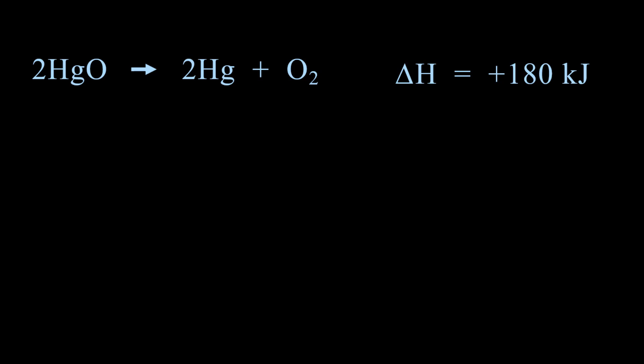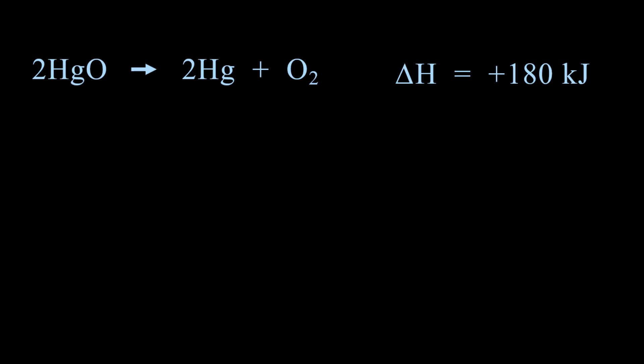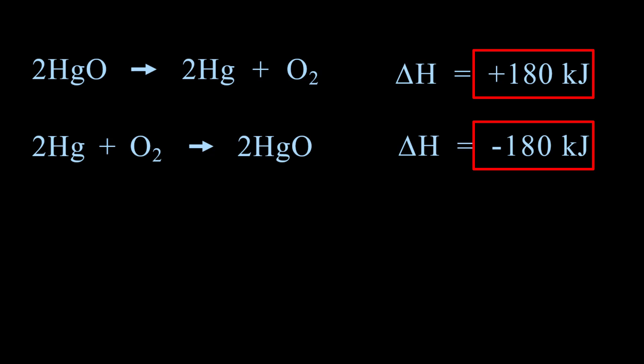There are many reactions which are reversible, where the products react to produce the reactants, and this is a reversible reaction. Mercury and oxygen can react to form mercury oxide. But notice the heat of reaction. The magnitude is the same, 180 kJ, but now it is negative. It is exothermic.